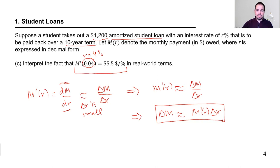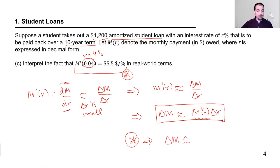If I multiply by delta R, I get a really useful way to interpret derivatives: delta M is approximately M prime of R times delta R. I'll come back to this formula over and over again in this presentation because we'll use it in so many different real-world contexts.